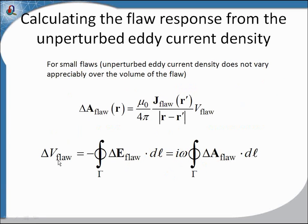If we want to look at the voltage change in a pickup coil, we can use the same model where the change in vector potential is simply the unperturbed eddy current density divided by the sensor-flaw separation times the volume of the flaw. Since the electric field is minus dA/dt, we can write in AC magnetics that it's i-omega times the integral of delta-A around the circular cross-section of the flaw.